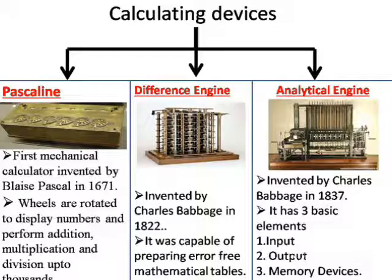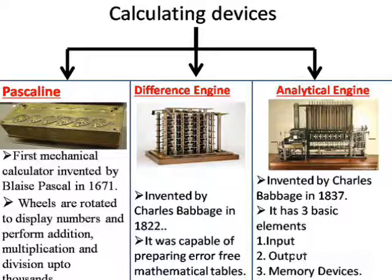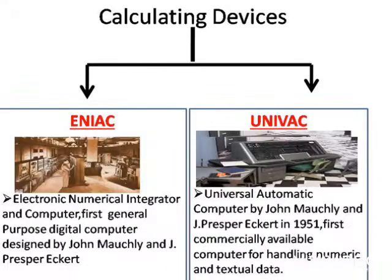The next two calculating devices are the Difference Engine and the Analytical Engine. Both devices were invented by Charles Babbage. The Difference Engine is capable of preparing error-free mathematical tables — error means mistakes. The Analytical Engine has three basic elements: input, output, and memory device.